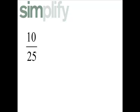Simplify 10 over 25. I'm going to divide both of these by what common factor? What number goes into 10? Well, does 5 go into 25? So 5 is the greatest common factor for 10 and 25, and when you divide,